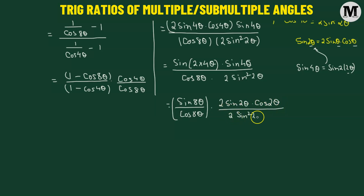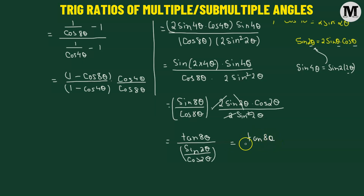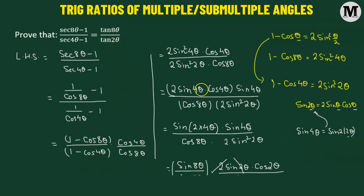We can factor out the 2 and one factor of sine 2θ from numerator and denominator. So we have sine 8θ over cosine 8θ — that's tangent 8θ — divided by sine 2θ over cosine 2θ — which is tangent 2θ. This gives us tangent 8θ over tangent 2θ, which is the right hand side. Hence, we have successfully proved the problem: the left hand side equals the right hand side.